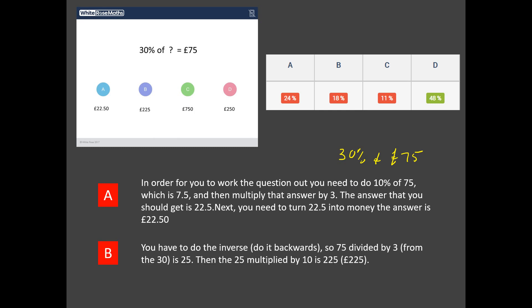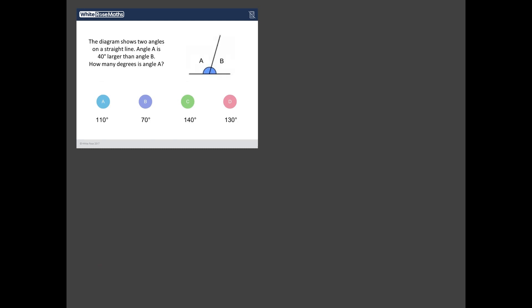Some students also end up with B, £225 for this one by doing it backwards. But again, clinging on to these rules is really dangerous in mathematics. Whereas if you just take your time, set out what the question tells you, what you know and what you don't know, and build it up systematically, hopefully you'll end up with the right answer.